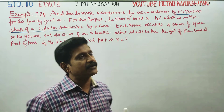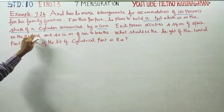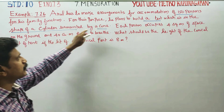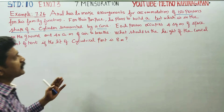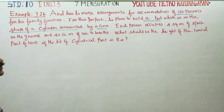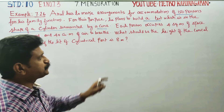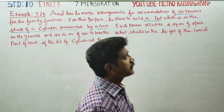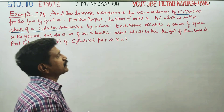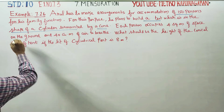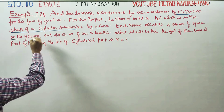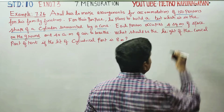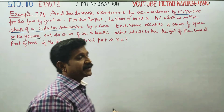The tent is a cylinder surmounted by a cone. Each person occupies 4 square meters of space on the ground — one person requires 4 square meters.